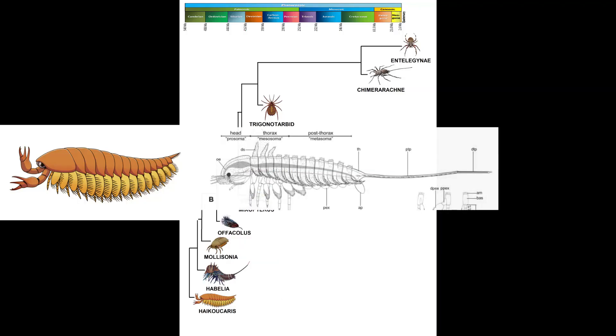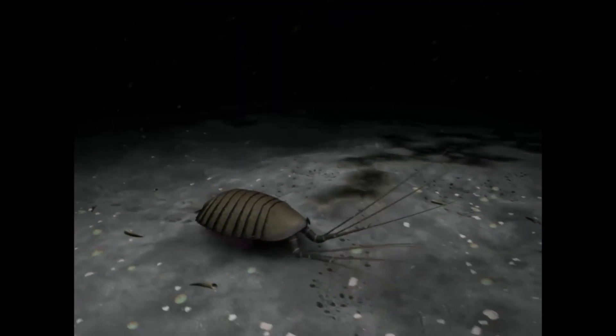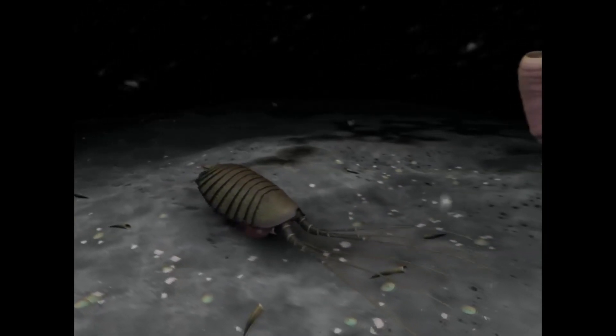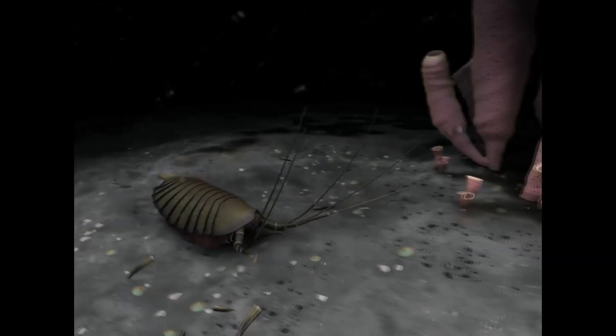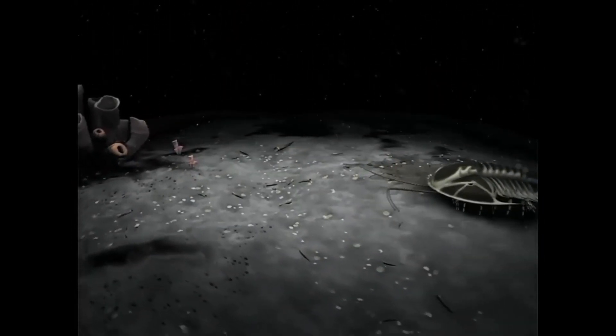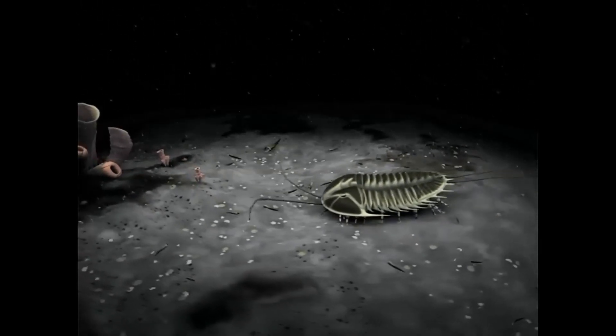From them, we connect the megacheirans to the chelicerates by having the first appendage transforming into a pincer and having the same number of segments in the body. There is an independent branch of the arachnomorpha where the trilobites and their relatives evolved from. Megacheirans like Lyncheoglia, with their first appendage already looking like an antenna and their head shield already resembling a trilobite cephalon, are important to understanding the evolution of the trilobitomorphs.